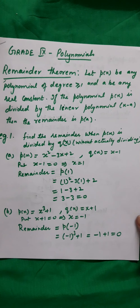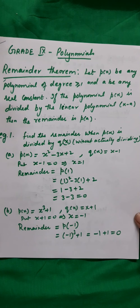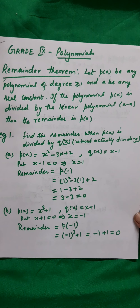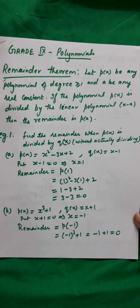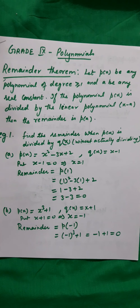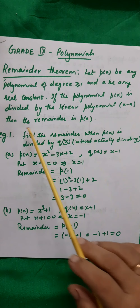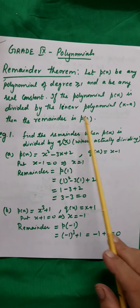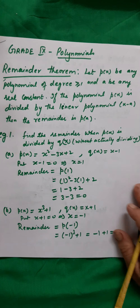Remainder theorem: Let p(x) be any polynomial of degree greater than or equal to 1, and let 'a' be any real constant. If the polynomial p(x) is divided by the linear polynomial (x - a), then the remainder is p(a).